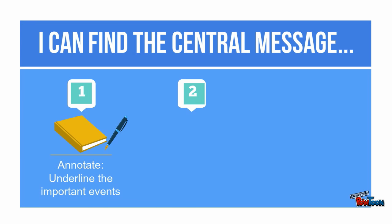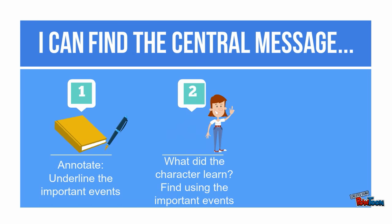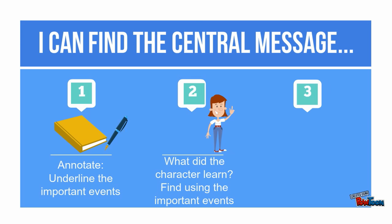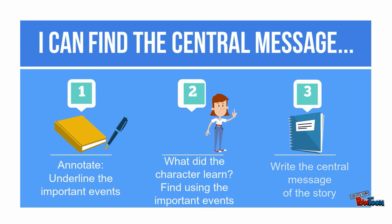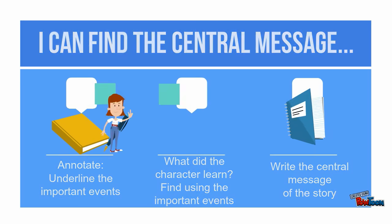Then ask yourself, what did the character learn? Use the important events that you underlined to support your answer. Last, write the big idea or central message of the story. What is the author trying to tell the reader?